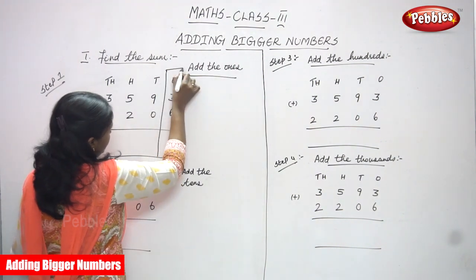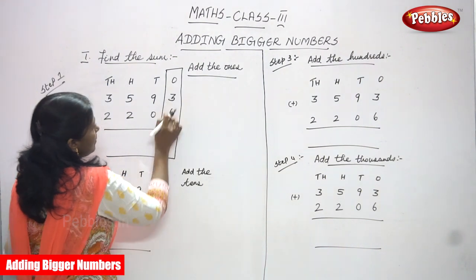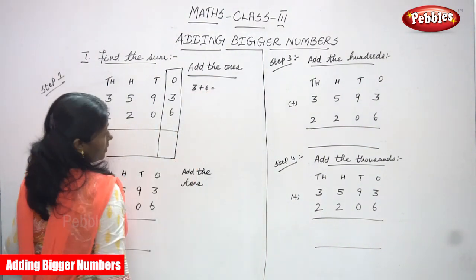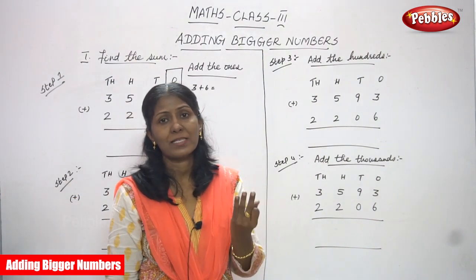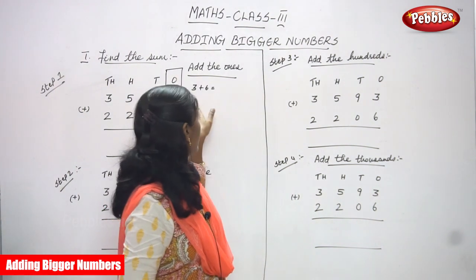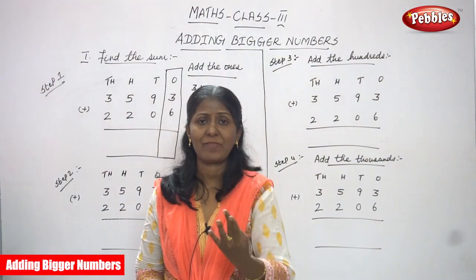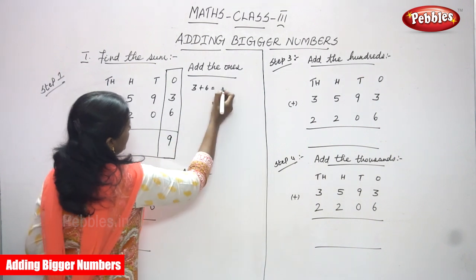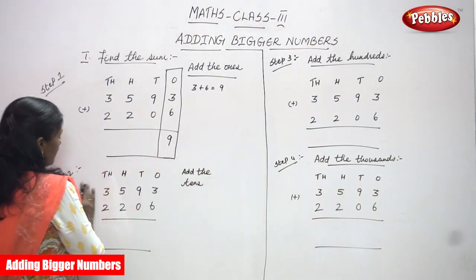Adding the ones place: three plus six. Three in the mind, six on the finger - after three: four, five, six, seven, eight, nine. So three plus six equals nine. You have to write nine. Step one is over.